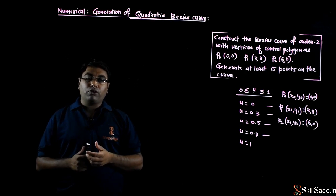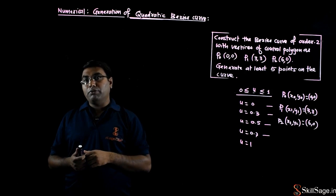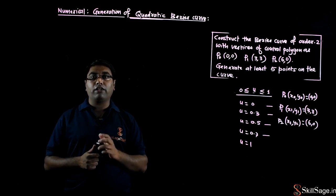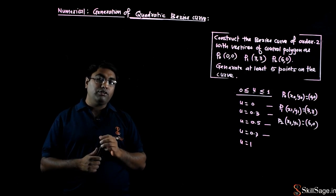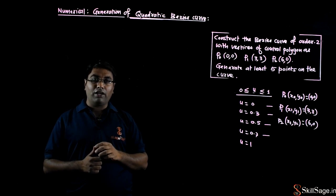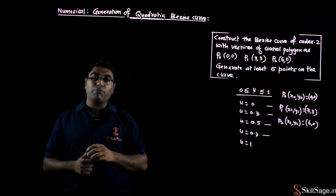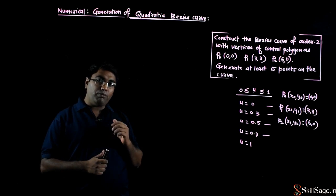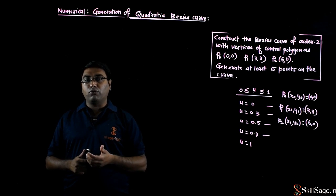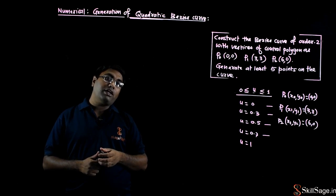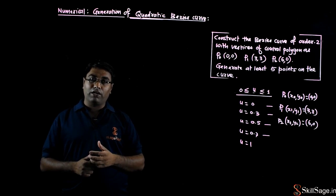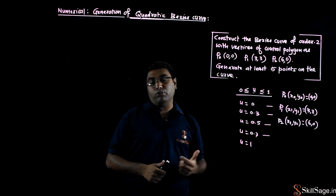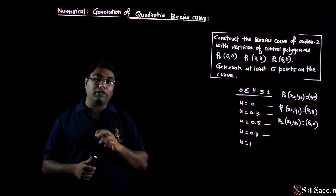Quadratic Bezier curve क्या होता, यह इससे पहले वाली वीडियो में हमने देखा था। कोई भी Bezier curve को quadratic Bezier curve तब कहा जाएगा जब उसके equation में highest degree of polynomial 2 हो। Basically highest degree of polynomial अगर 2 है तो ऐसे curve को quadratic Bezier curve या फिर order 2 Bezier curve भी कहा जाता है। यहाँ पर दिया हुआ है Bezier curve of order 2 — order 2 Bezier curve means quadratic Bezier curve.